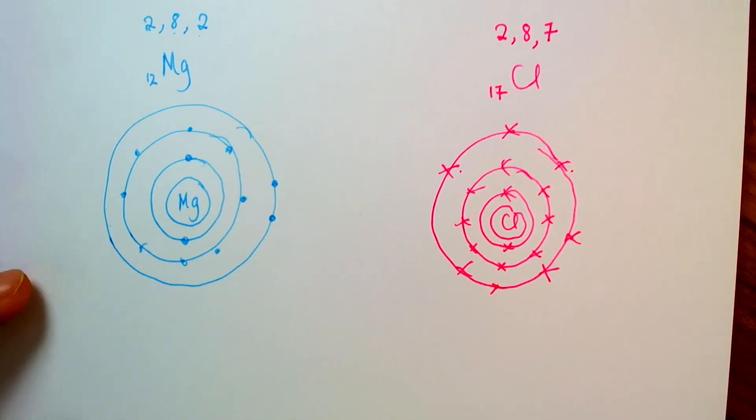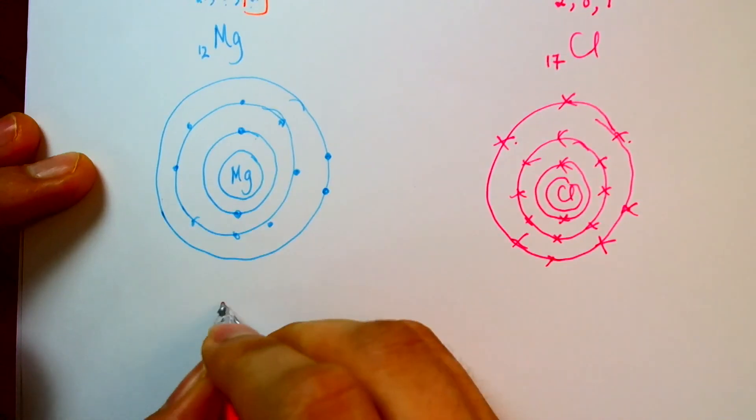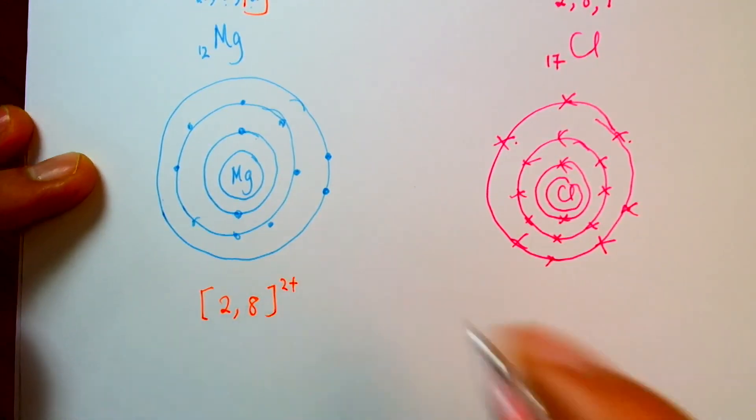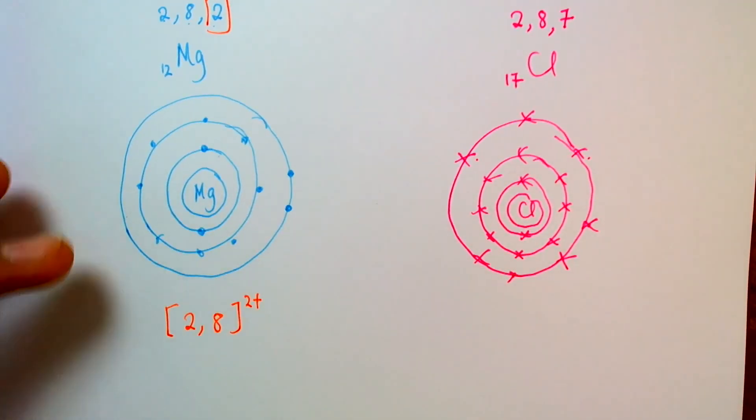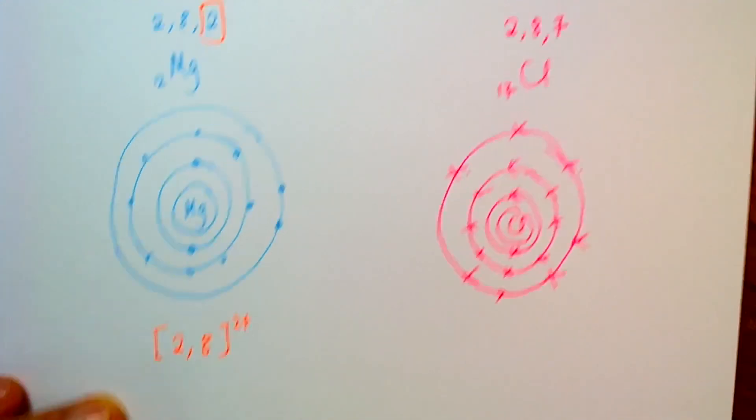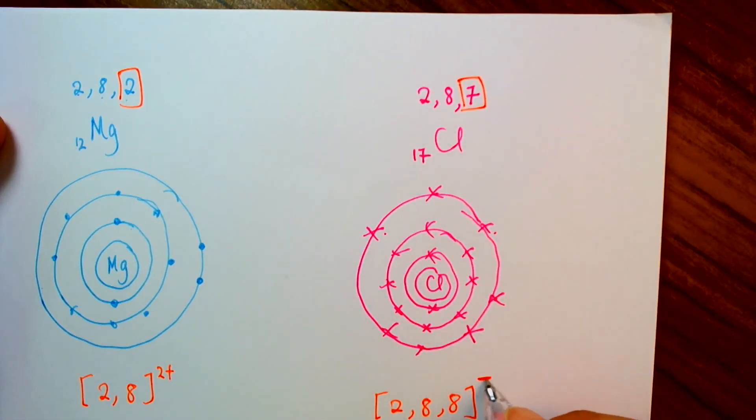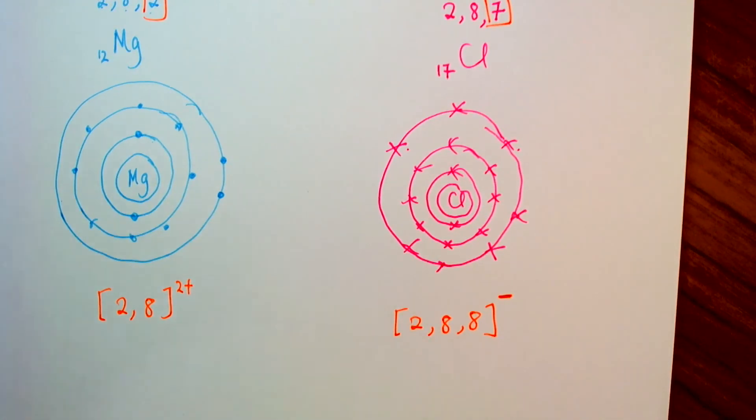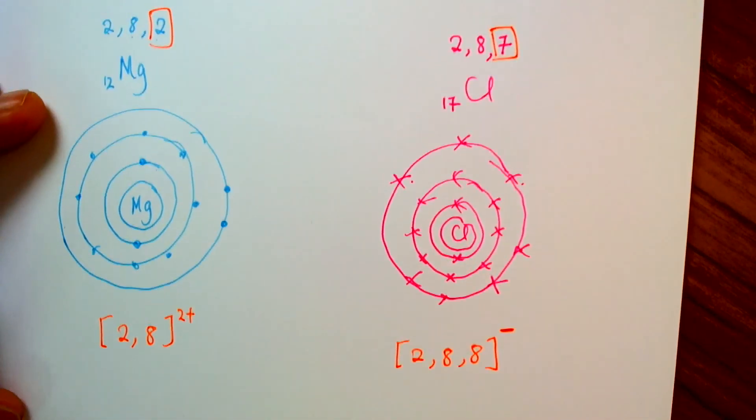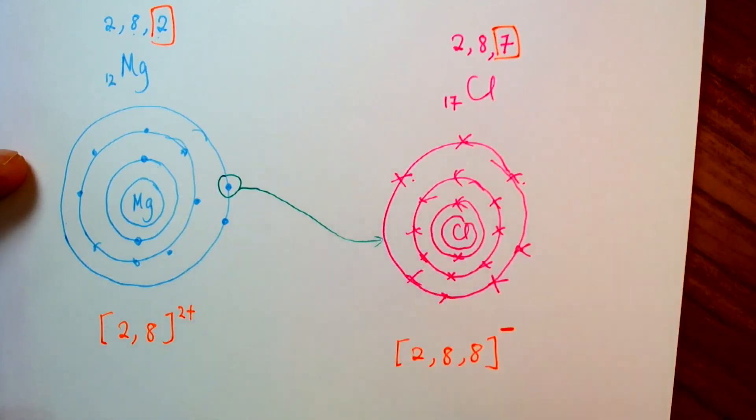Now magnesium meets chlorine. Magnesium says, well, wouldn't it be nice if I could just get rid of these 2 electrons? Then I'll be happy. Then I'll have electronic configuration 2, 8, and a 2 plus charge. If only I could lose those 2 electrons. Now it meets chlorine. And chlorine is saying, well, I don't know if I can take 2, but I can definitely take one of the electrons. That would make me happy because if I had one extra electron, that would make my electronic configuration 2, 8, 8. Since I have an extra electron, I would have one minus charge. So magnesium says, all right, I will give you one of my electrons. So it transfers one of the electrons over the chlorine.